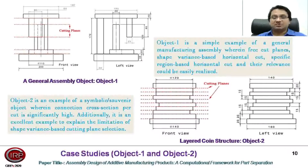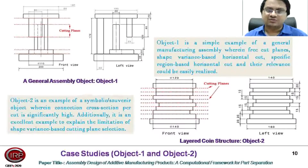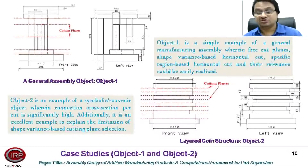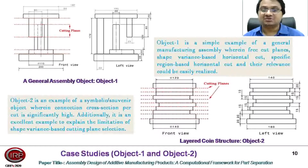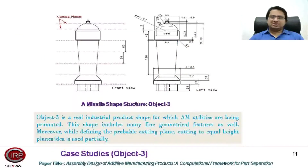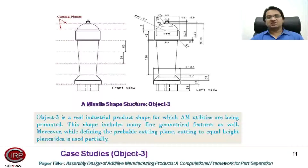Object one is a simple example of a general manufacturing assembly wherein free cut, specific region-based cut, and shape variance-based cut can be easily realized. Object two is an example of a symbolic and souvenir object wherein connection cross-section area per cut is significantly high. Object three is a small shape structure having seven probable cutting planes, and its front view and left view with dimensions are shown. Object three is a real industrial product shape for which additive manufacturing utilities are promoted, and this shape includes many fine geometrical features.